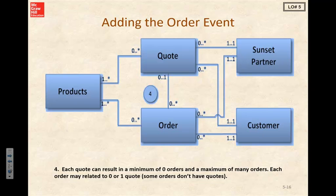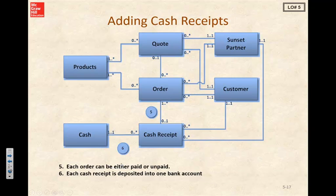We can continue on and add another event called the cash receipt. We've got another resource of cash correlated to our other events of cash receipt. Each order can be either paid or unpaid, so we see the relationships and multiplicities there. And each cash receipt is deposited into one bank account. This would be the completed structure model for our sales and collection process.